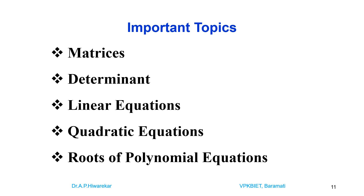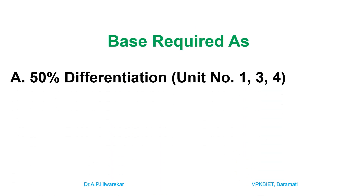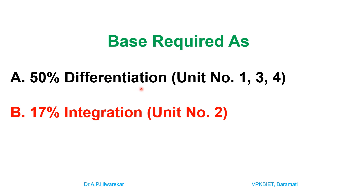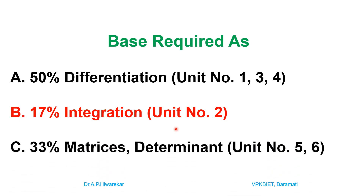To summarize the base requirements: units 1, 3, and 4 are based on differentiation, so 50% of the syllabus depends on derivatives. Unit 2 — Fourier series — is based on integration, which accounts for about 17% of the course. Units 5 and 6 cover linear algebra based on matrices and determinants, making up approximately 33% of the syllabus.